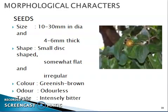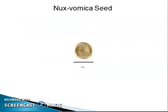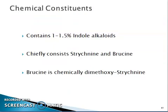Morphological characters of the seeds: size is 10–30 mm in diameter and 4–6 mm in thickness; shape is small, disc-like, somewhat flat and irregular; color is greenish-brown; odor is odorless; taste is intensely bitter. This is the nux-vomica seed. Chemical constituents: contains 1.1–1.5% indole alkaloids.